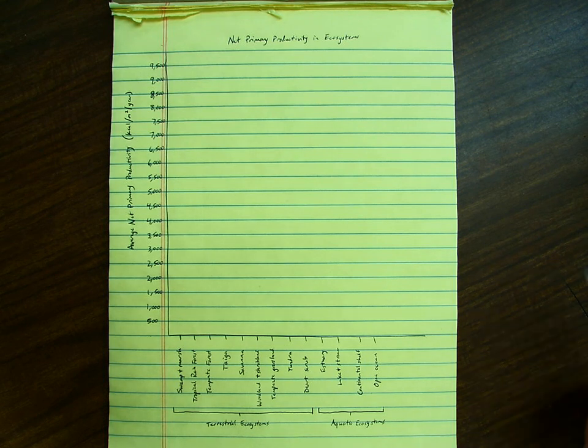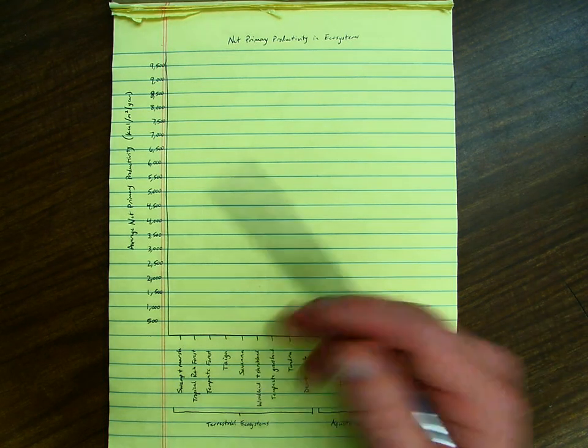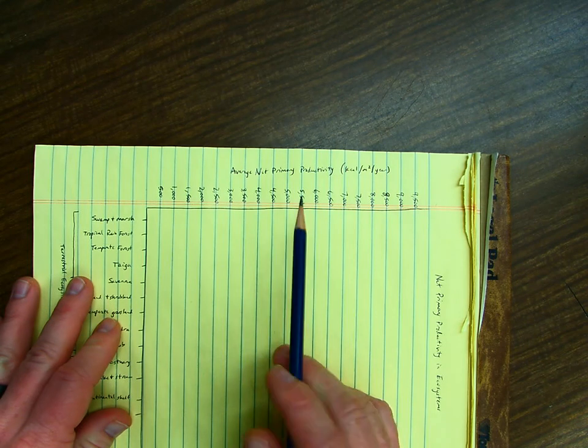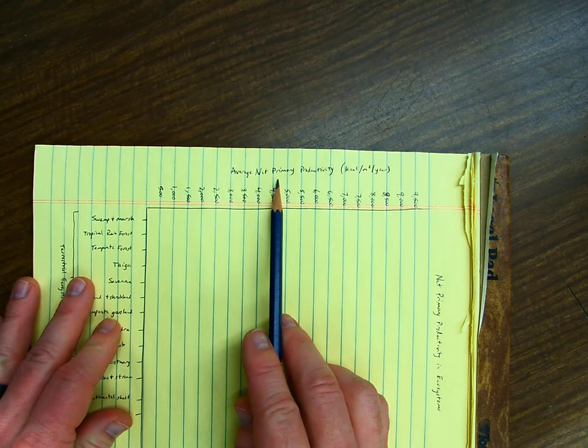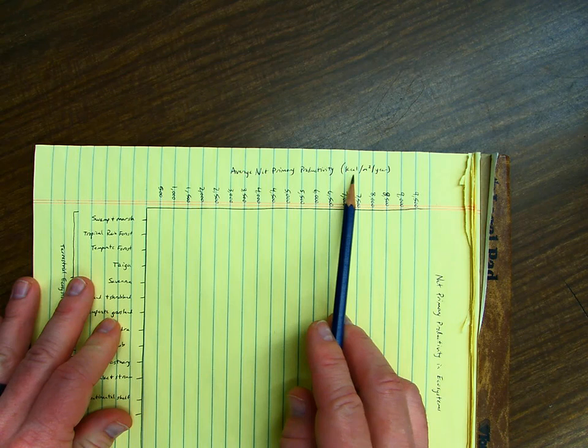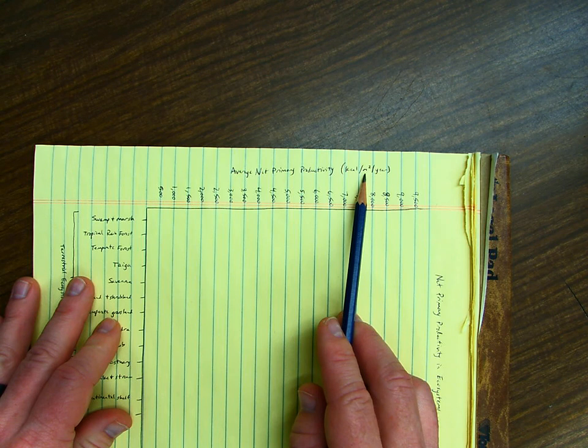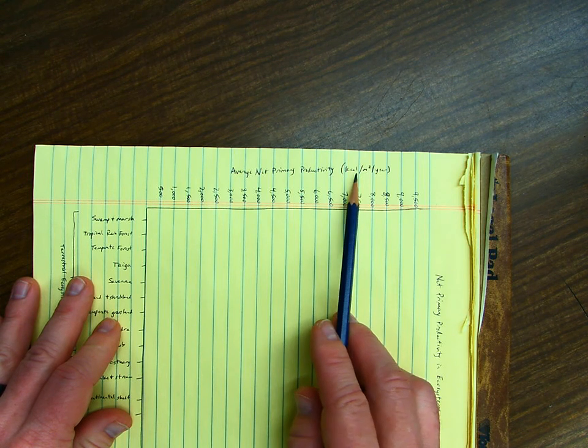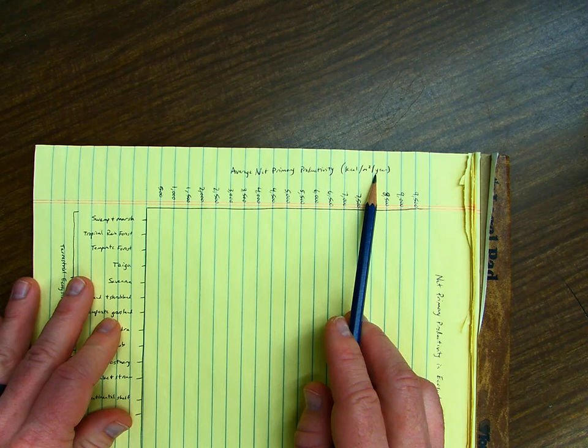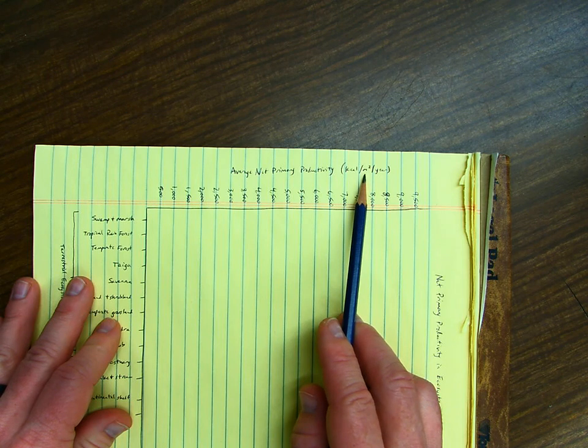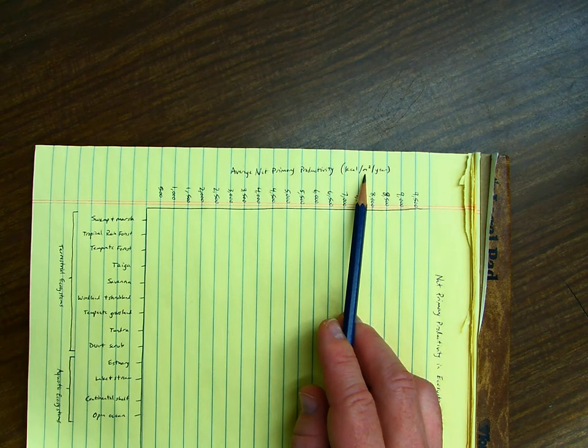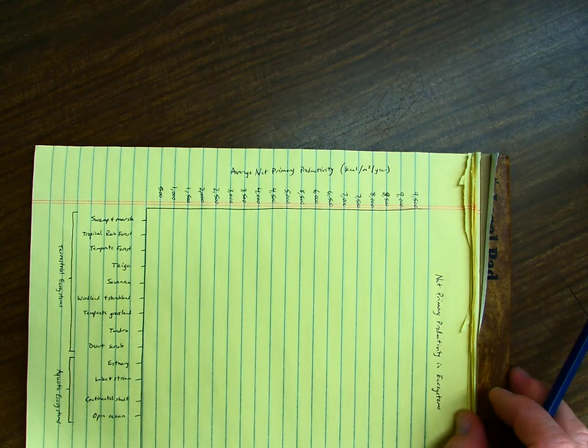On the y-axis, I have average net primary productivity in kilocalories per square meter—think of that as one square, one meter by one meter, basically a big box with meter sides—per year. So kilocalories per square meter per year. This square meter is the same exact thing we're doing in our field study; we've marked it off one by one meter on each side.